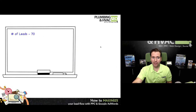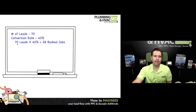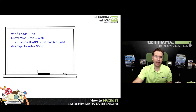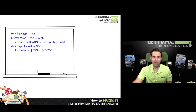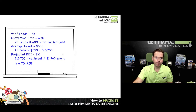If we look at this on the chalkboard: 70 leads at an average conversion rate of 40% would be 28 booked jobs at an average ticket of $550. 28 jobs at $550 is $15,700 in revenue, which is a seven-time return on investment.